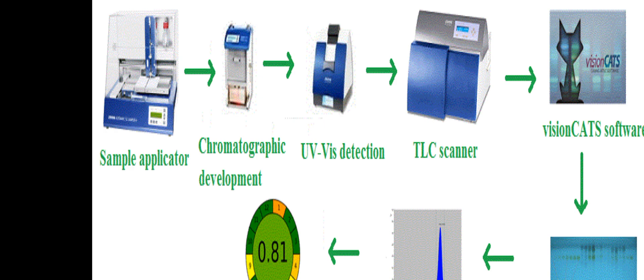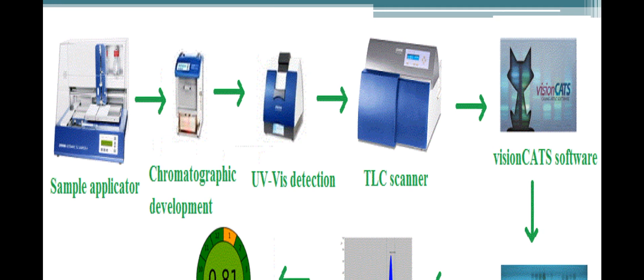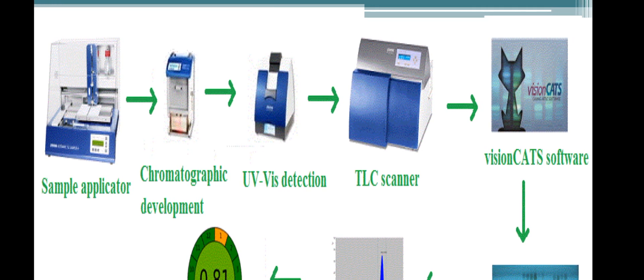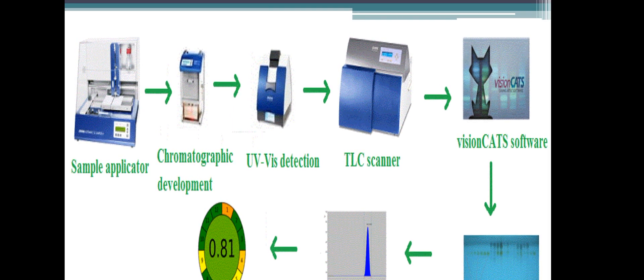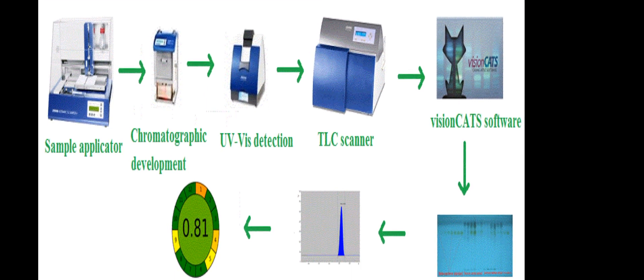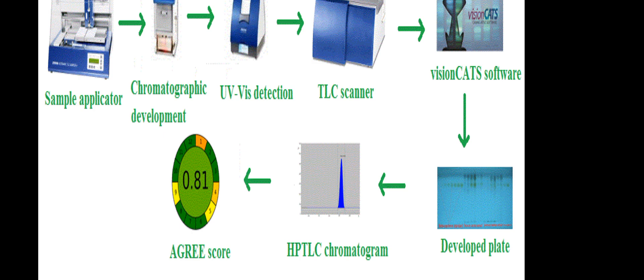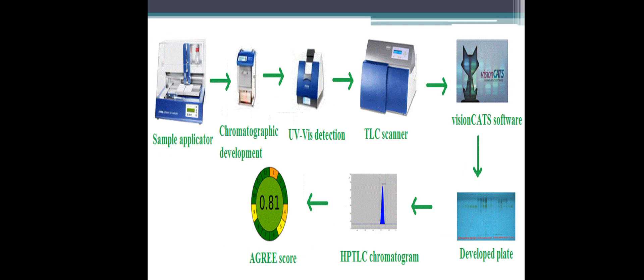This is the general diagram for the working of HPTLC. First, a sample applicator is used in which the sample is applied over the precoated plates. After that, chromatographic development takes place, followed by UV-visible detection in which the sample is detected and its RF values are recorded. A TLC scanner then scans the components on the plate, and VisionCat software detects the components. The developed plate shows the HPTLC chromatogram and the score.